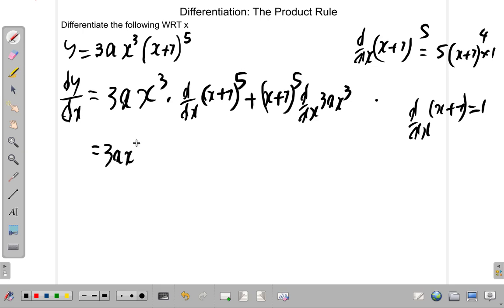Now, let's see what we have here. We have 3ax³ times d/dx of (x+7)^5. We did it over here. What we have is 5 by 1 - you can't forget about the 1 and just write 5 - (x+7)^4. That's it. Plus, then we hold (x+7)^5 as it is, then differentiate 3ax³.